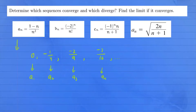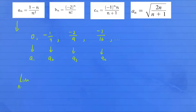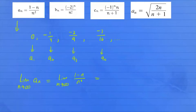Now we want to know: will this sequence converge or diverge? We take the limit of this formula — the limit as n approaches infinity of one minus n over n squared. As n gets larger and larger, the denominator n squared will grow much faster than the numerator. Therefore, this limit goes to zero, which means that a_n converges.